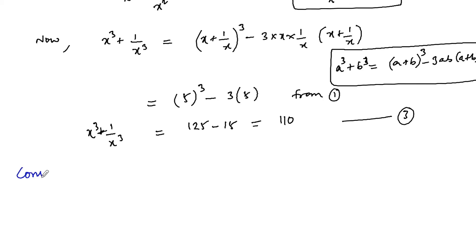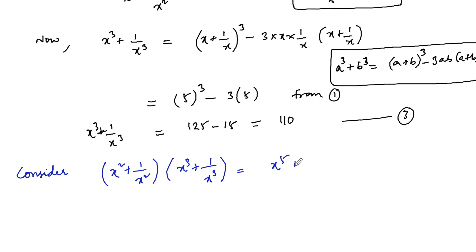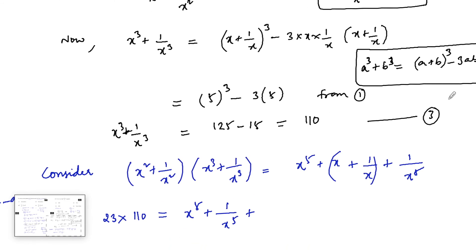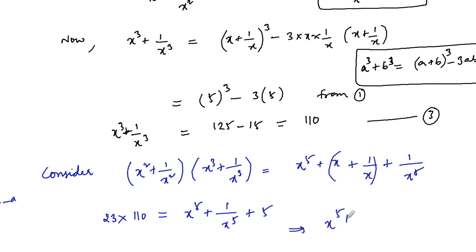Now consider (x squared plus 1 upon x squared) times (x cubed plus 1 upon x cubed), which expands to x to the power 5 plus x power 3 divided by x squared plus x squared times 1 upon x cubed plus 1 upon x power 5, simplifying to x power 5 plus 1 upon x power 5 plus x plus 1 upon x. Substituting values: 23 times 110 equals x power 5 plus 1 upon x power 5 plus 5. So x power 5 plus 1 upon x power 5 equals 23 times 110 minus 5.